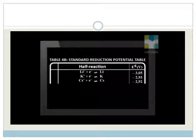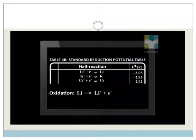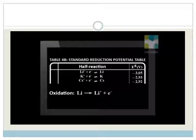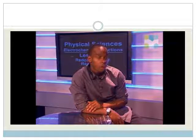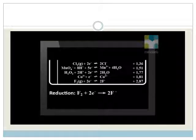Here are a few things to remember when using this table. We read an oxidation half reaction from right to left — for example, the lithium oxidation reaction is: lithium reacts to form a lithium ion plus one electron. For a reduction half reaction, we read the table from left to right. Taking fluorine at the bottom of the table, the half reaction is: fluorine plus two electrons forms two fluoride ions.